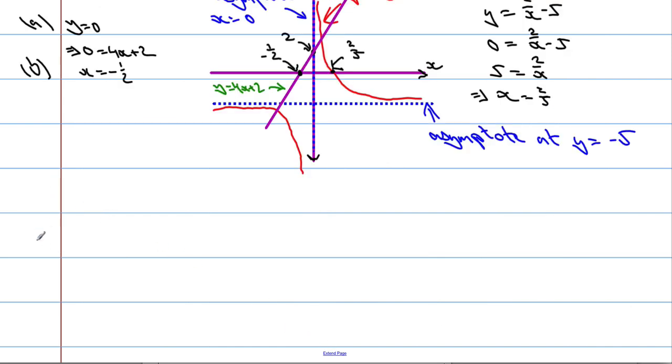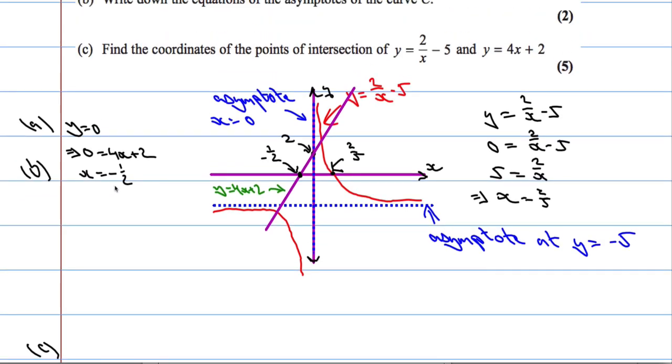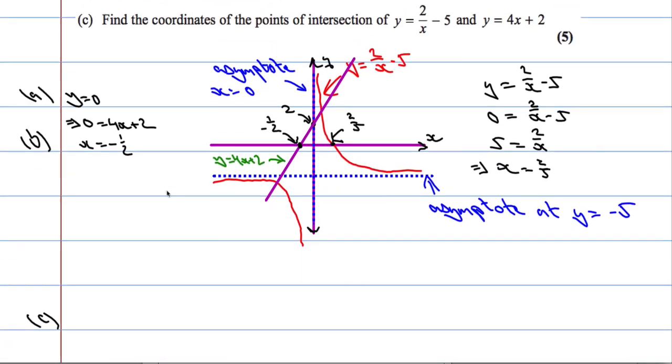Let's move on to part C. Part C. We need to find the coordinates of the points of intersection of y equals 2 over x minus 5 and y equals 4x plus 2. So they'll intersect where they're equal to each other. So what I'm going to do is I'm going to let 2 over x minus 5 be equal to 4x plus 2, because they must share the same y value.